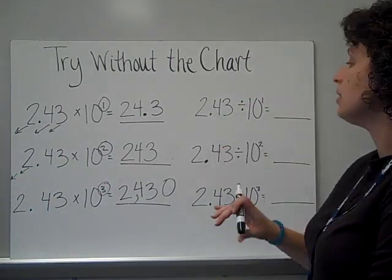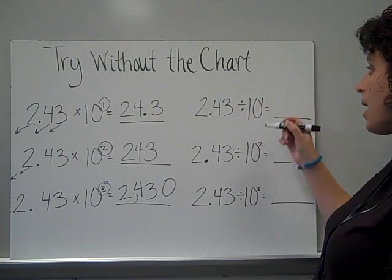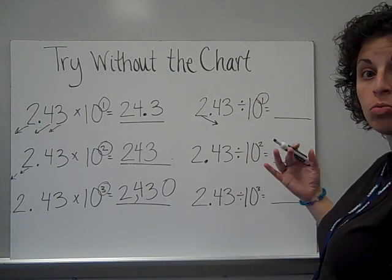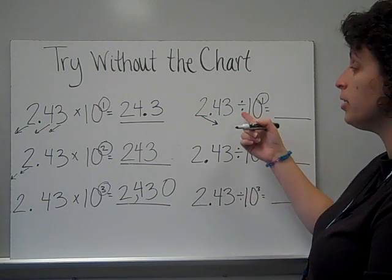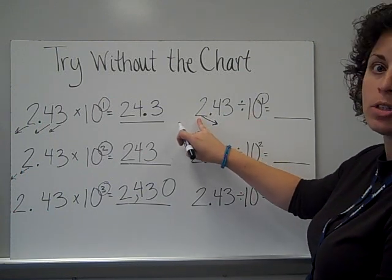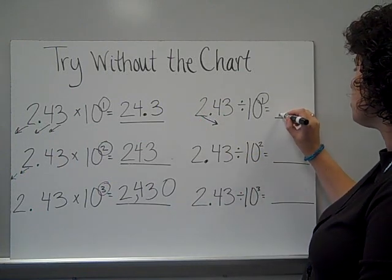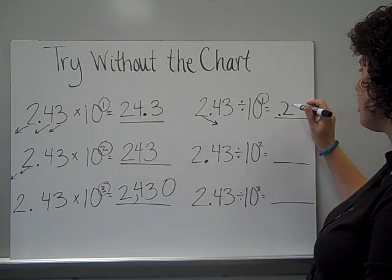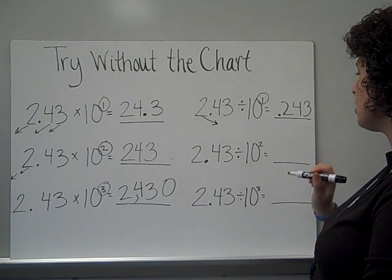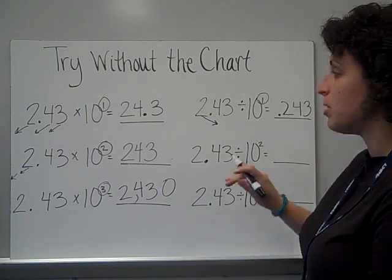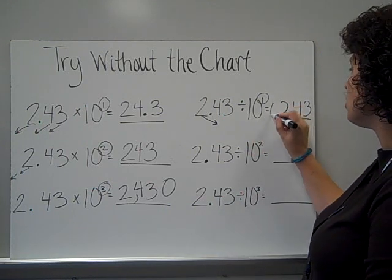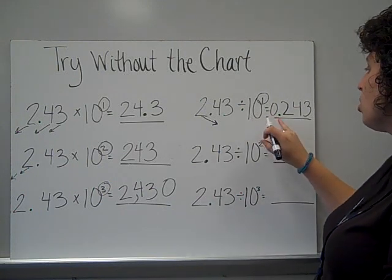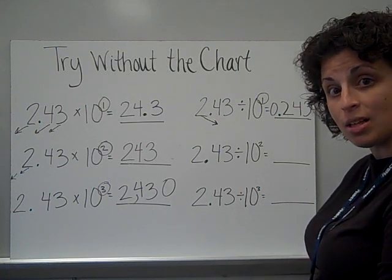The opposite is going to be to divide. Dividing by 10 to the first power — that's one move for each of these digits. They're going to move to the right, making the number smaller since I'm dividing. This 2 is no longer going to be in front of the decimal; it's going to be behind it in the tenths place. The 4 moves to the hundredths and the 3 to the thousandths place. I need to fill in a zero in the ones place, so my quotient is 0 and 243 thousandths.